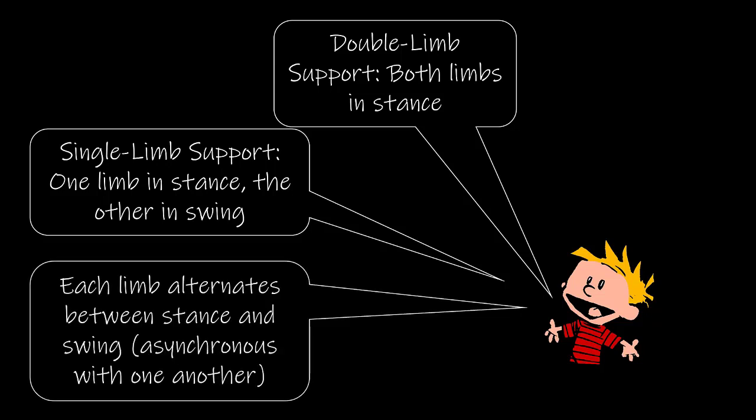Each limb alternates between stance and swing, and they are also asynchronous with one another. There will be times, such as double limb support, when both limbs are going to end up being in stance, but we are not going to have both limbs being in swing at the same time.